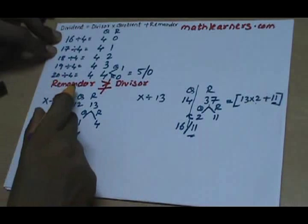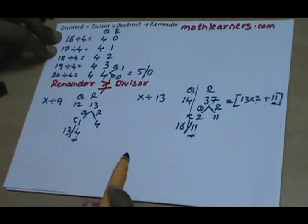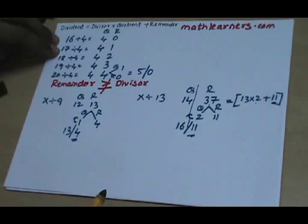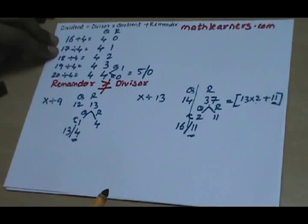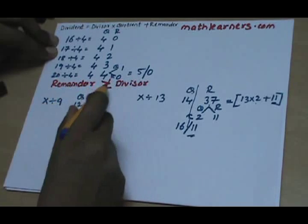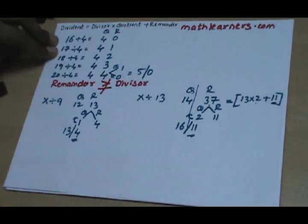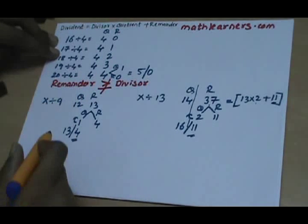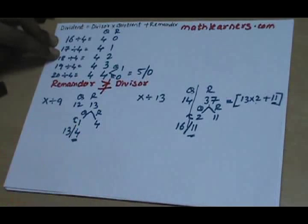So this was the concept about how the remainder can never be greater than or equal to the divisor. But in Vedic mathematics, there will be scenarios where, depending upon some criteria, we purposefully have to make the remainder greater than or equal to the divisor. So we follow the reverse method of this.